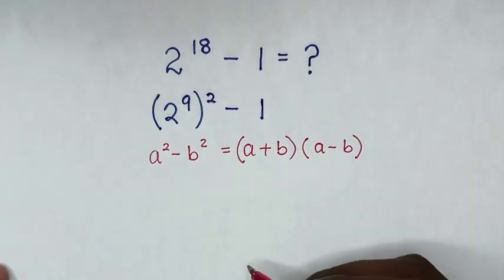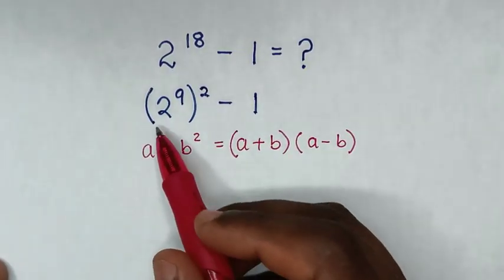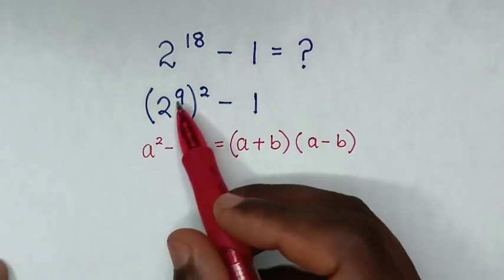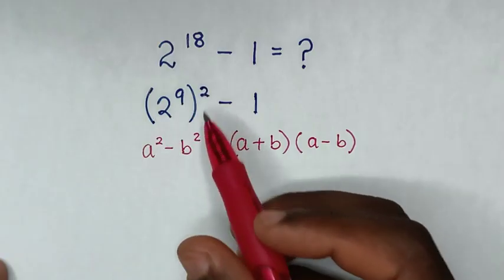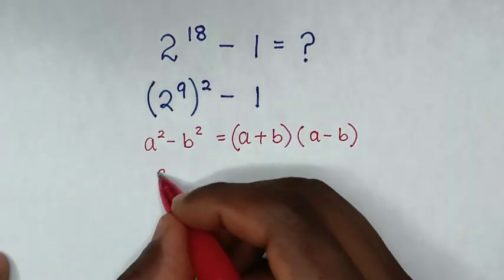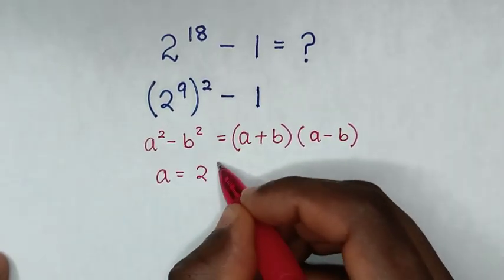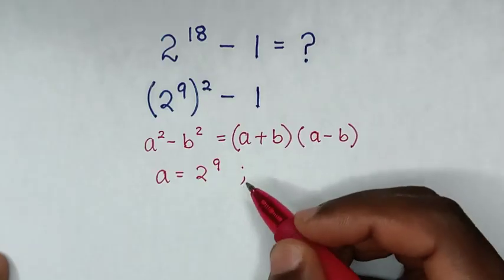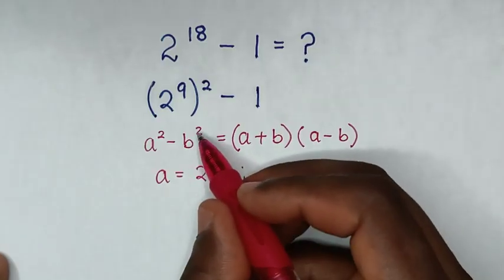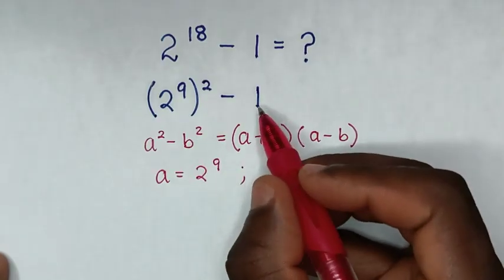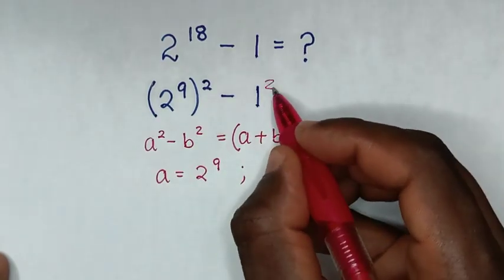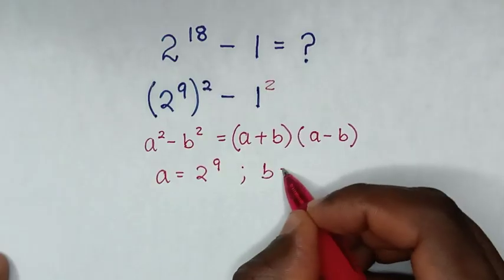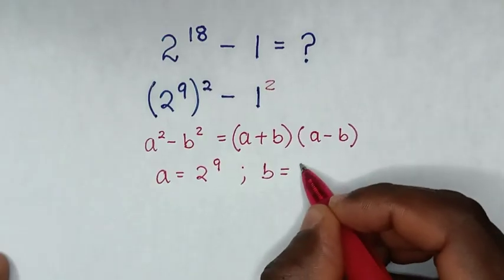When we compare a square with 2 power 9 bracket square, then a is equal to 2 power 9. And when we compare b square with 1, which is the same as 1 square, so b is equal to 1.